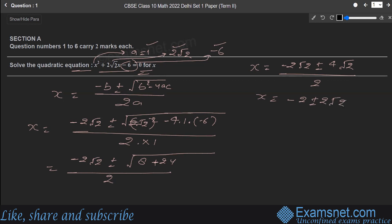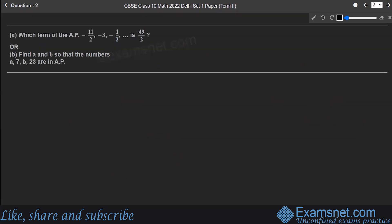This gives two values of x. The first is x = (−2√2 + 4√2) / 2 = 2√2 / 2 = √2. The second is x = (−2√2 − 4√2) / 2 = −6√2 / 2 = −3√2. So the two solutions are x = √2 and x = −3√2.